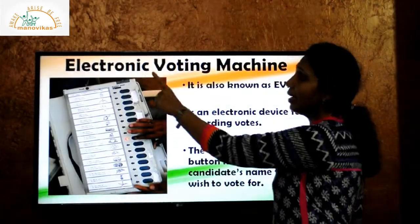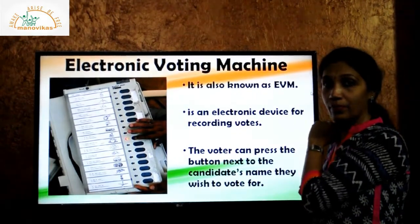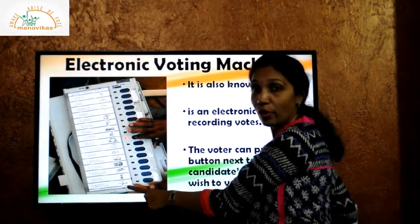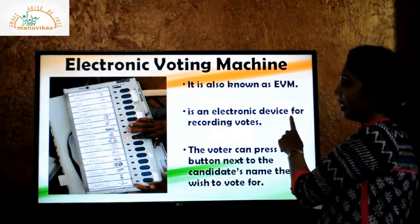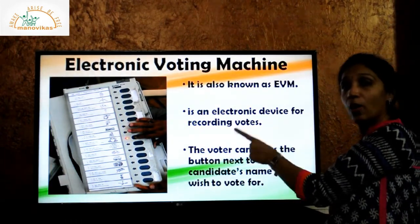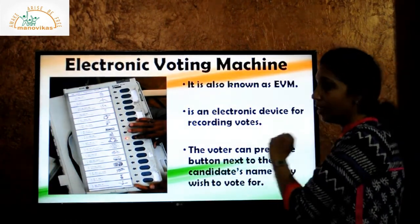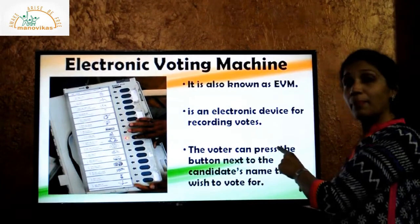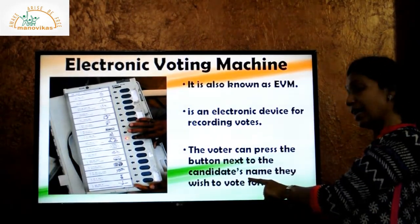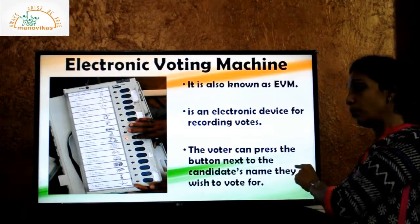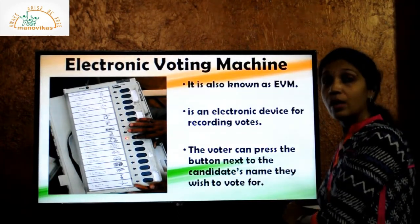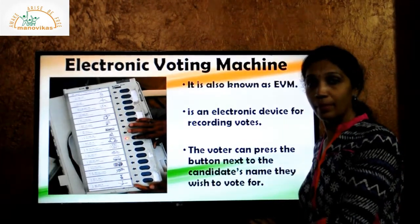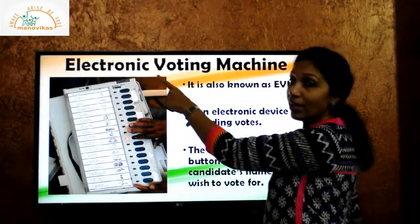The booth has an Electronic Voting Machine, which is also known as EVM. It is an electronic device for recording votes. There are a total of sixteen buttons on this EVM. The voter can press the button next to the candidate's name whom they wish to vote for. Earlier, voting was done using a ballot sheet paper, but nowadays they are using the EVM machine.